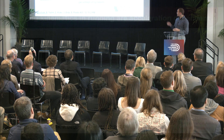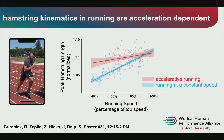This figure illustrates one of our key results. It shows that the peak hamstring length is not much different at top speed, where the lines intersect, but below about 80% of top speed, the hamstrings are stretched significantly more during acceleration. This has implications for how we monitor athletes — we need to consider running speed in addition to acceleration, which isn't always done.